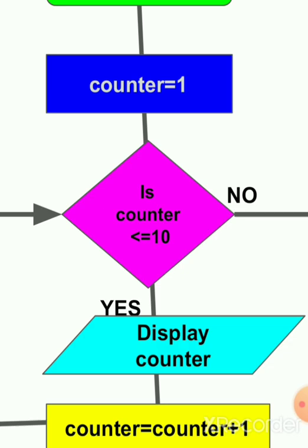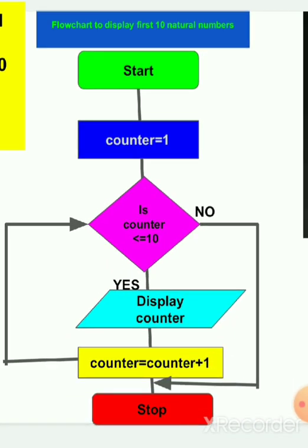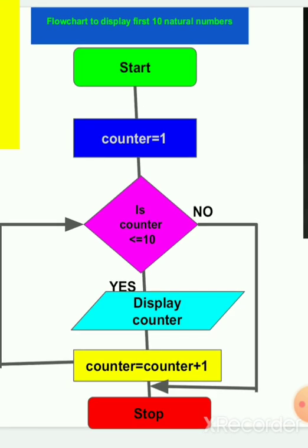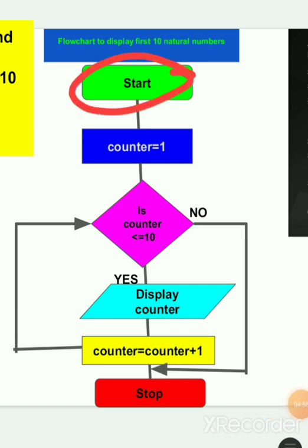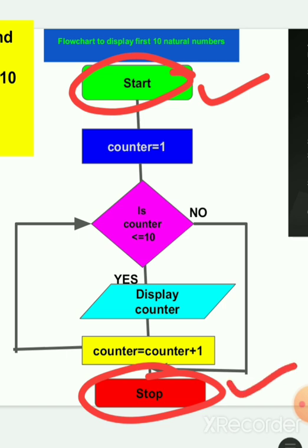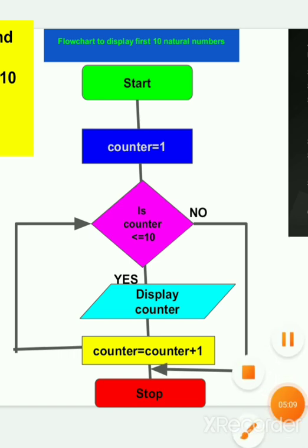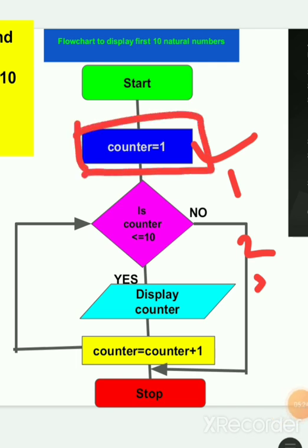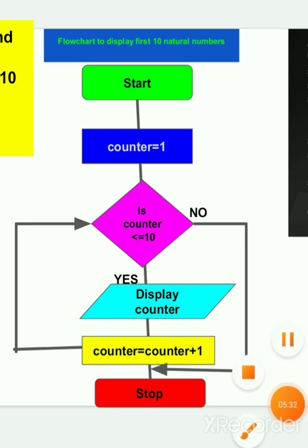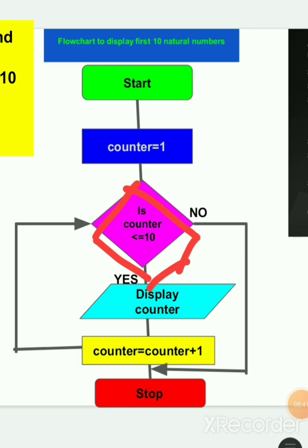Now we will see the flowchart. A flowchart is a graphical representation of the flow of instructions. Different symbols are used for different purposes. The very first symbol is the oval shape, also called the terminator symbol, used for Start and Stop. The rectangular symbol is used for processing — here we assign counter equals one since we want to print natural numbers one to 10.